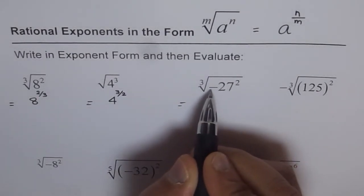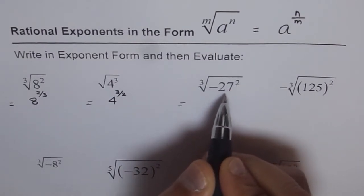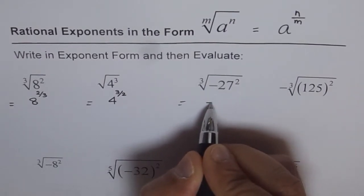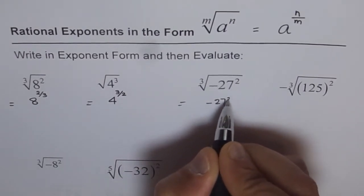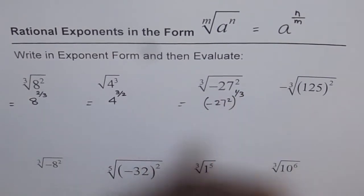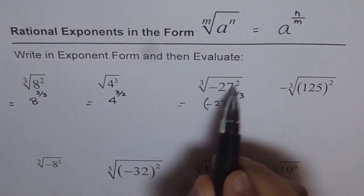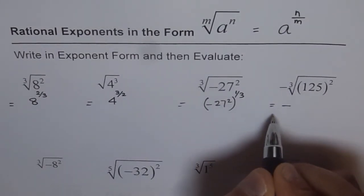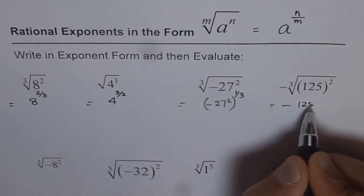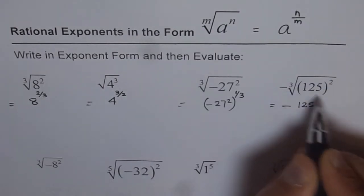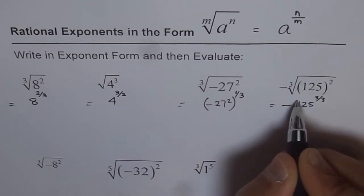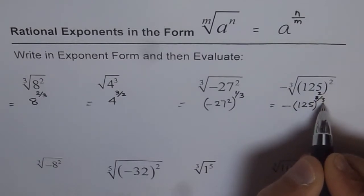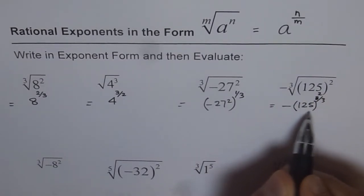Now minus is not squared — only 27 is squared. So it's better to write this as minus of 27 squared to the power of 1 over 3. It's technical because minus is not squared. Now here in this next case, minus is outside, so I prefer to write minus and then 125 to the power of 2 over 3. Remember, only 125 is to the power of 2 over 3 — that is 2 squared and third root. Minus is outside the radical term.